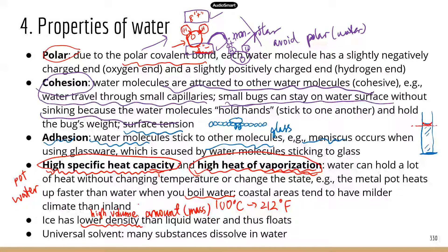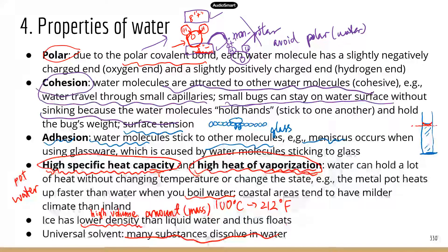Because ice is lighter than liquid water, ice floats on liquid water. In winter, ice floats on water and forms almost like an insulation layer to keep the liquid water temperature mild, so that aquatic organisms living underneath the ice can still survive. Water is also a universal solvent — many substances dissolve in water, which is why we have water in our body to dissolve electrolytes, sugars, proteins, and transport all those substances needed by our body.